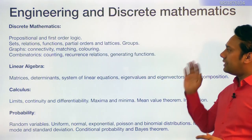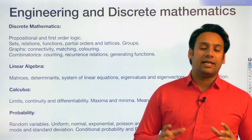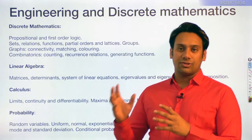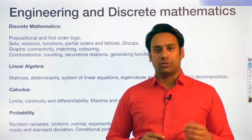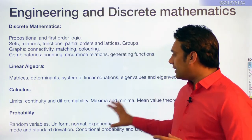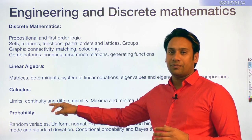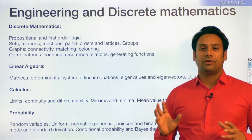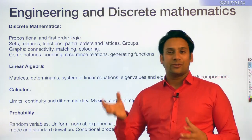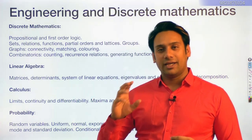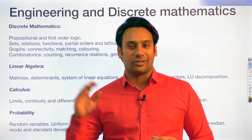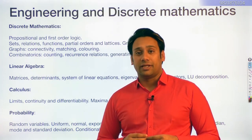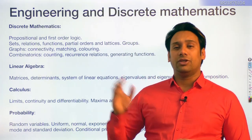In GATE computer science, engineering mathematics has only three topics: Linear Algebra, Calculus, and Probability. The remaining mathematical portion comes from Discrete Mathematics, which is unique to computer science and not in other engineering branches. Discrete Mathematics is core to computer science — for example, graph theory studied here will be very useful in algorithms and other subjects.